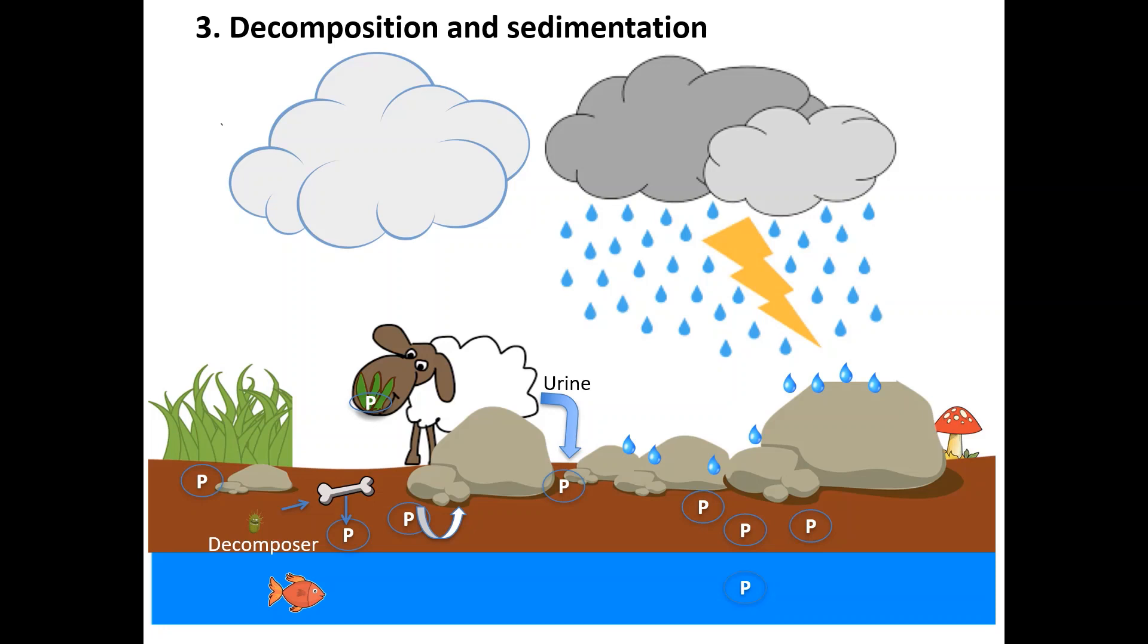Soil and water will end up in sediment and rocks which will again release phosphorus by weathering, and the cycle repeats again.